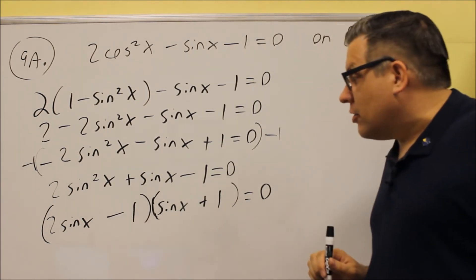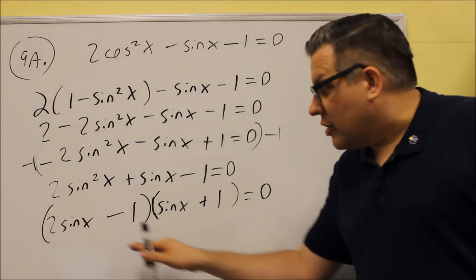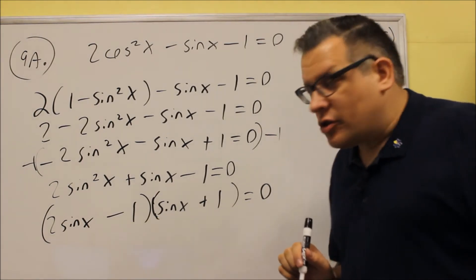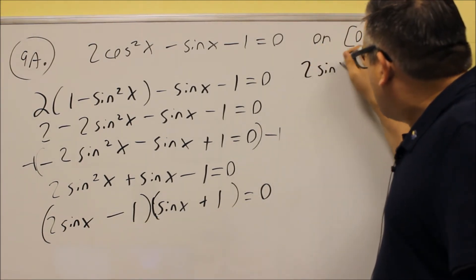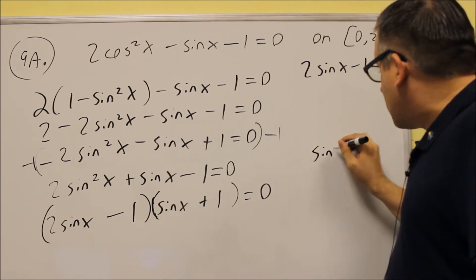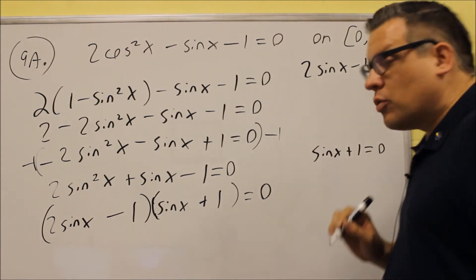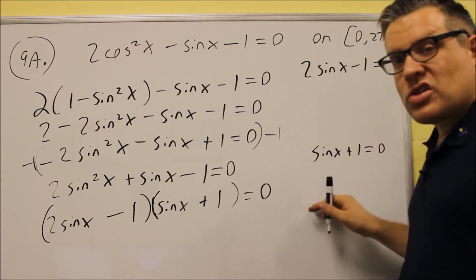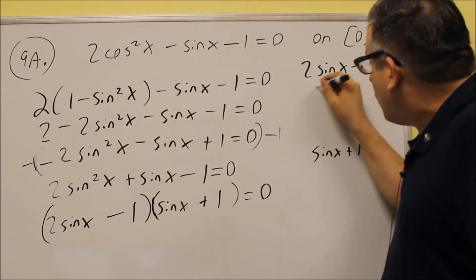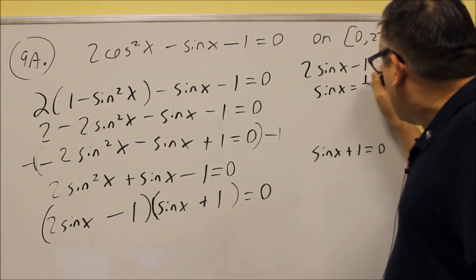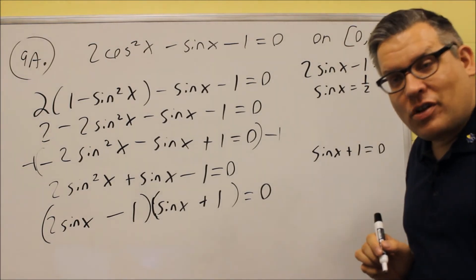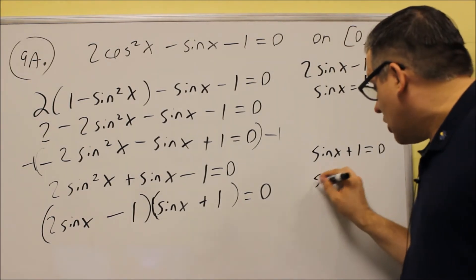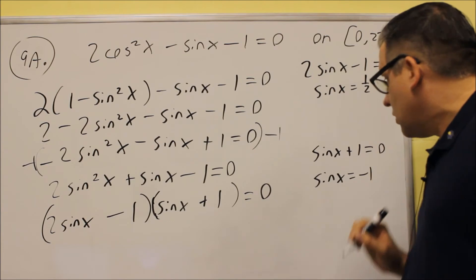Now we have it all factored, and the last thing we're going to do is set each of these equal to 0 to get the answers. We have 2 sine x minus 1 equals 0, and sine x plus 1 equals 0. You want to solve for sine for both of these. So the top one, if I solve for sine, I'm going to get positive 1 half. And down here, if I solve for sine, I'm going to get negative 1.